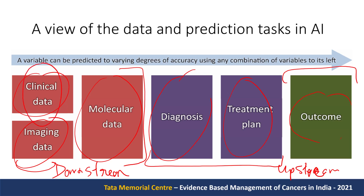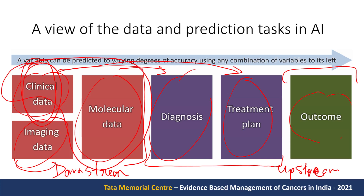Based on clinical data, can we predict the doctor's diagnosis? Based on clinical data, can we predict the treatment plan by looking at several plans collected over the past few years? Looking at clinical and molecular data, can we predict survival based on the treatment plan? We can also add imaging data and ask: can we predict the diagnosis, the treatment plan, or the outcome from a single or combined modality?